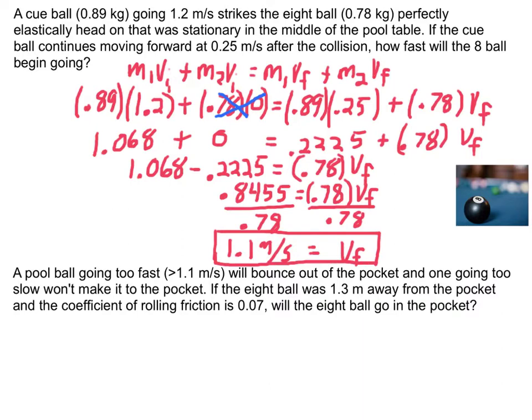So a pool ball that's going too fast, greater than 1.1 meters per second, will actually hit the pocket and bounce out. So if you hit it too hard, it's not going to fall in. It's going to bounce out. And one going too slow, friction, the rolling coefficient of friction, will actually slow it down and won't even make it. So we need to make sure whenever we strike our cue ball and it collides with the eight ball, and the eight ball now has velocity, we don't want the eight ball to be going too fast, which means we didn't want to hit our cue ball too fast. So my question here is, with what we know about the final velocity of our eight ball, coefficient of friction, and the distance away from the pocket, will the eight ball actually go in the pocket?